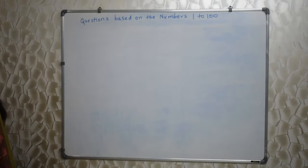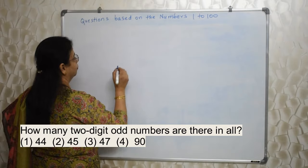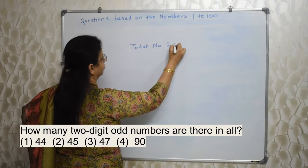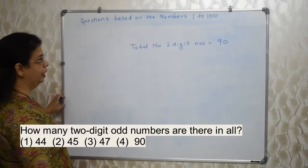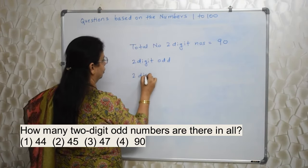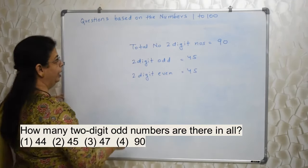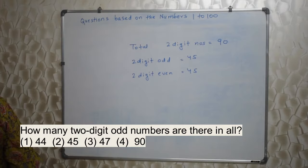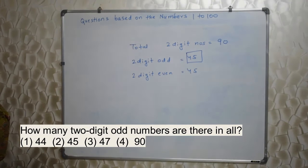First question will appear on your screen: How many two-digit odd numbers are there in all? Very easy and straightforward question. The answer is also very easy to arrive at. Total number of two-digit numbers is 90, so obviously half of them will be odd and half will be even. Two-digit odd will be 45 and two-digit even will be 45. So our answer is going to be 45, option 2.